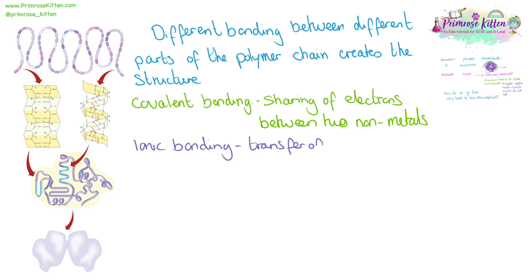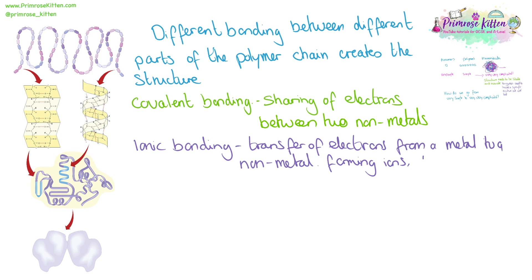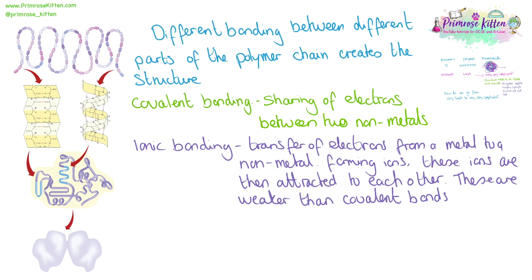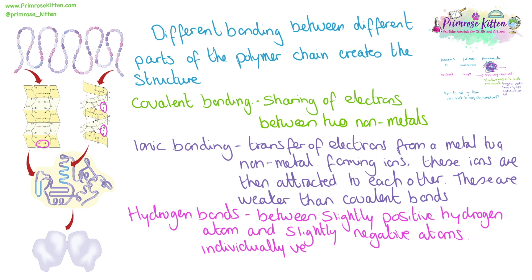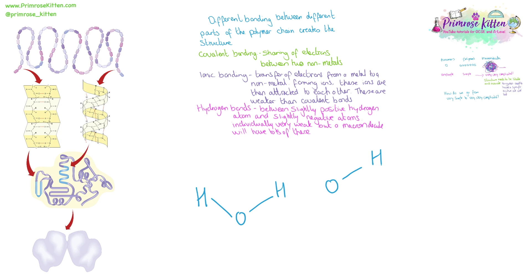Ionic bonding is the transfer of electrons, and this happens from a metal to a non-metal. This will then form ions, and these ions are attracted to each other. This type of bonding is weaker than covalent bonding. And we have hydrogen bonding, shown here in pink. This is between a slightly positive hydrogen and a slightly negative atom. Now individually, these hydrogen bonds are very, very weak, but there are going to be a large, large number of hydrogen bonds within your macromolecule, and overall that is going to have a very strong effect. I know water is not a macromolecule, but I'm just going to use this as an example to show you the different types of bonding.